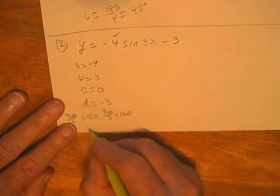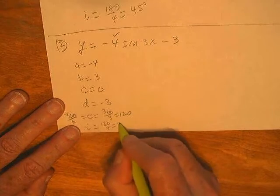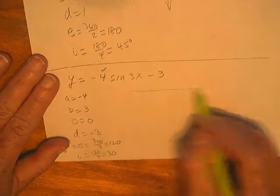E is 360 divided by b, and that makes the increment be 120 divided by 4, which is 30.